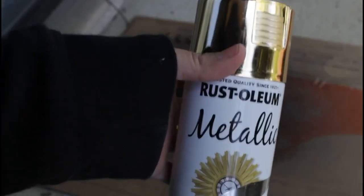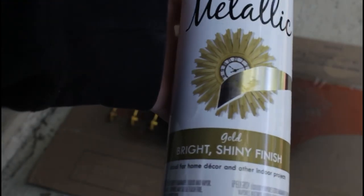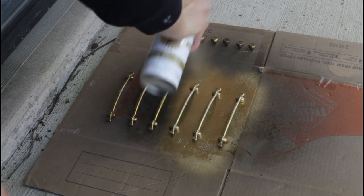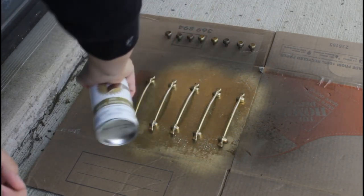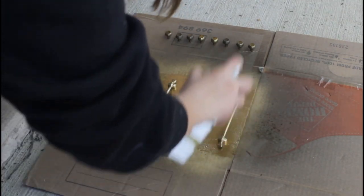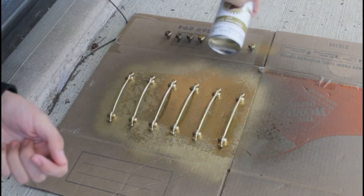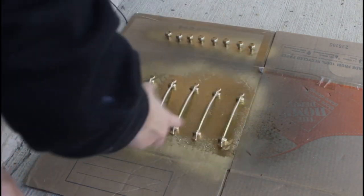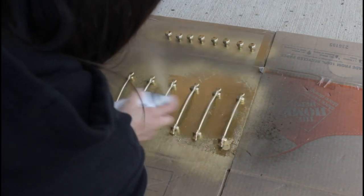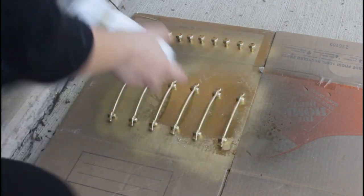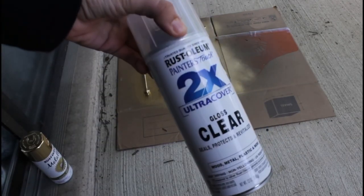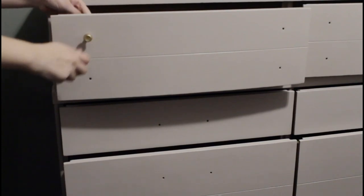This is the spray paint I used: Rust-Oleum Metallic in a gold bright shiny finish. I did a couple layers to make sure that I hit every single spot. Then, to protect it on top, I used the Ultra Cover Gloss Clear Rust-Oleum top coat.